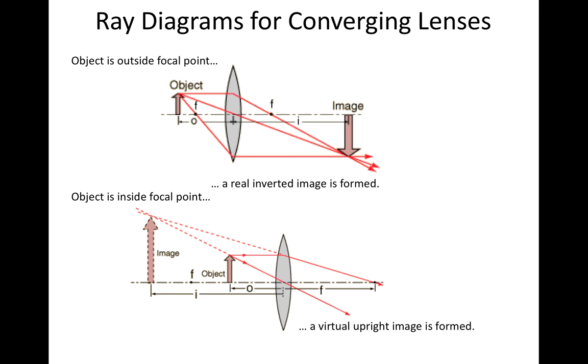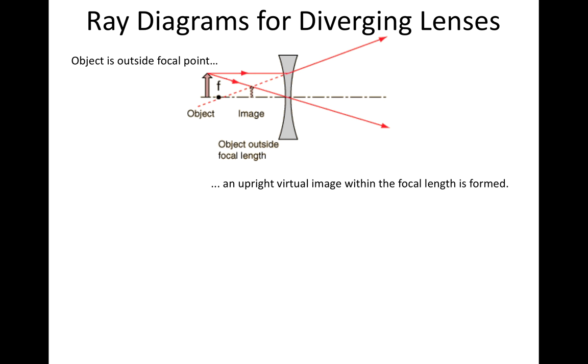Now finally, we've got diverging lenses. And as I promised you, both of these options, whether our object is outside the focal point or within the focal point, either way, we're going to find that we get the same result. So let's just check out how that works.